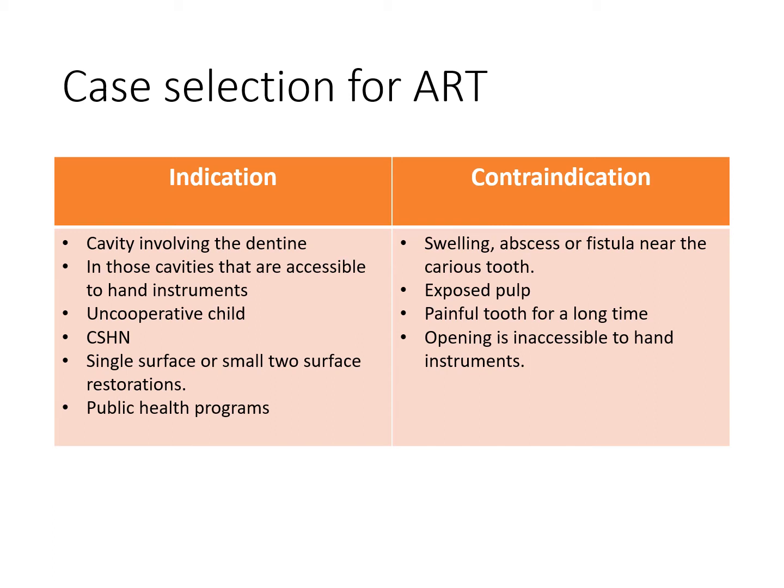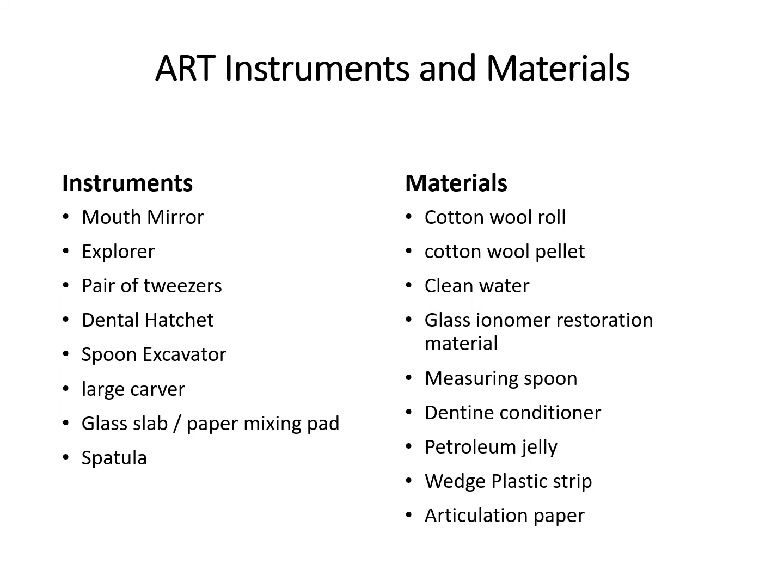Contraindications for ART include: swelling, abscess, or fistula near the carious tooth indicating pulpal involvement requiring pulp treatment before restoration; pulp exposure during excavation; a tooth that has been painful for a long time indicating irreversible pulpitis requiring pulp therapy first; and cases where the opening is inaccessible to hand instruments and enamel cannot be cut without a handpiece.